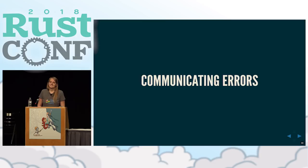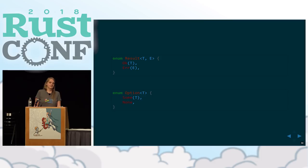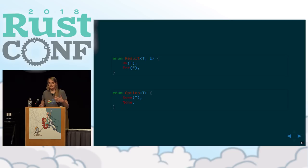Speaking of things exploding in your face — let's talk about errors. In Rust, we have these amazing types Result and Option that let you return something from a function and it contains state information. Result communicates whether it's ok or an error. Option communicates whether a value is existent. That's super convenient because you can just return something from a function — I don't have to explain this to you, you probably know this.